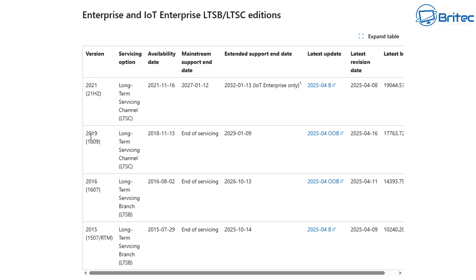Looking at the enterprise and IoT enterprise versions, we have the 2019 1809 version — a long-term servicing channel LTSC version with end of servicing in 2029. There's also the 2021 21H2 version, which is the IoT Enterprise only version, supported right up until 2032. So you can see the end-of-life dates for these versions are quite long, but you're going to run into some other issues we'll talk about later.